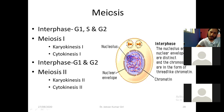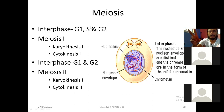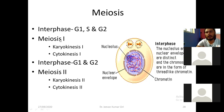For all cell divisions, there is an interphase and a division phase. So the cell cycle has interphase and division. Now we are reading the meiosis division. So before the actual cell division there is the interphase, and in that interphase, again G1, S, and G2 phase.